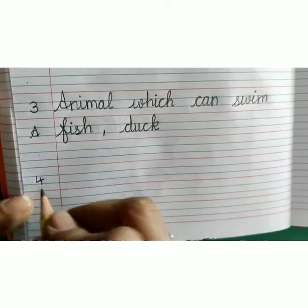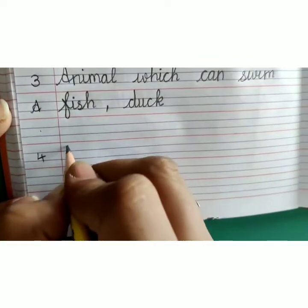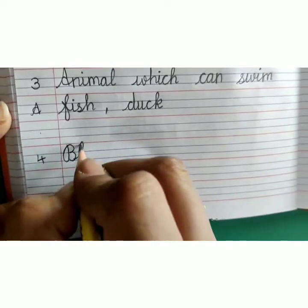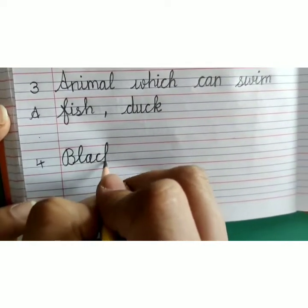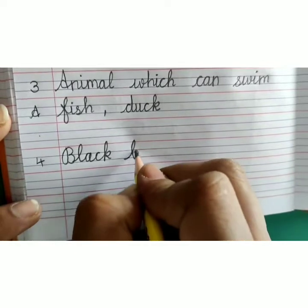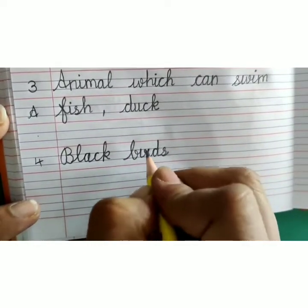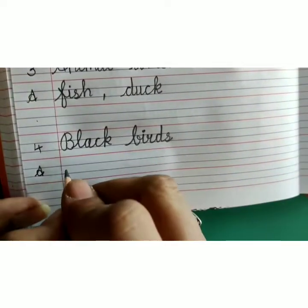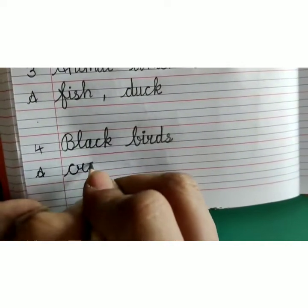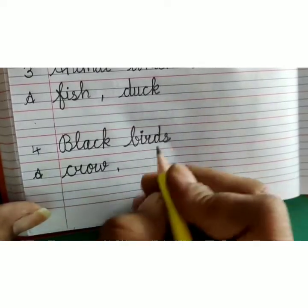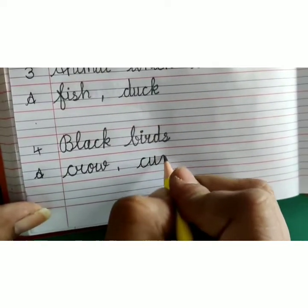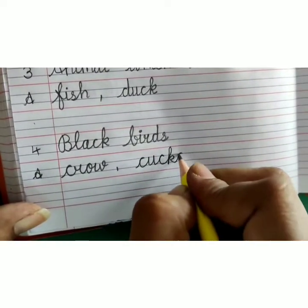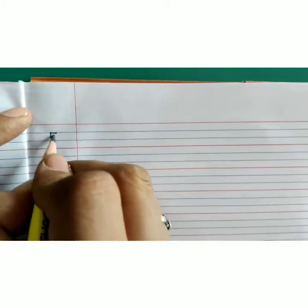Leave one line, number 4. Capital B-L-A-C-K, black, B-I-R-D-S, birds, black birds. Answer: C-R-O-W, crow, comma, C-U-C-K-O-O, cuckoo. Now on the next page, write down number 5.